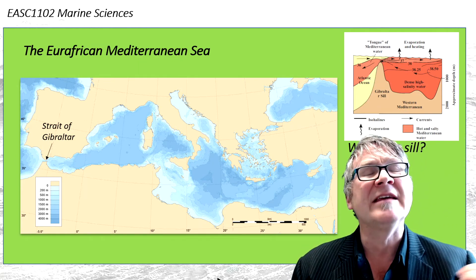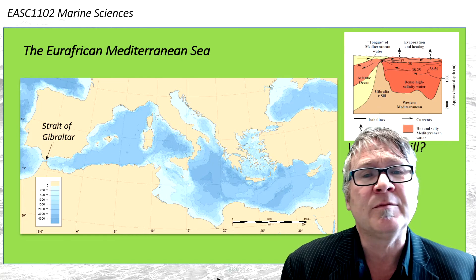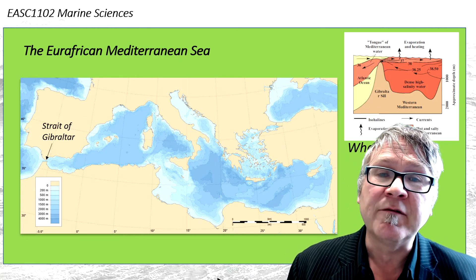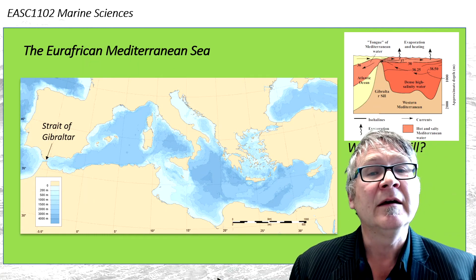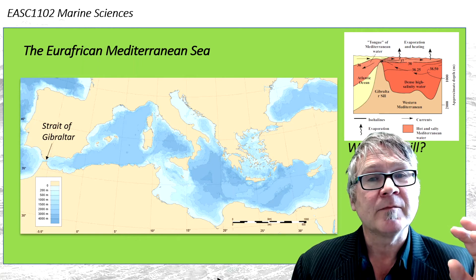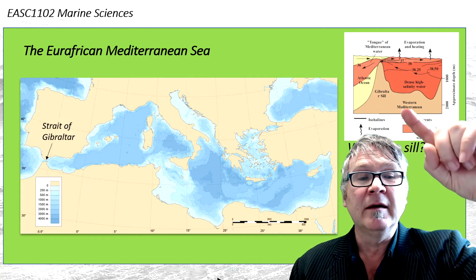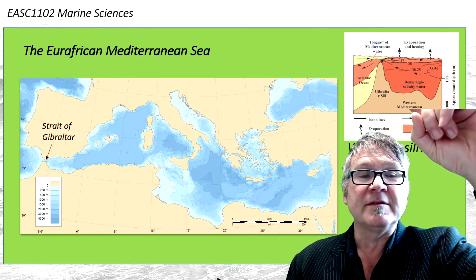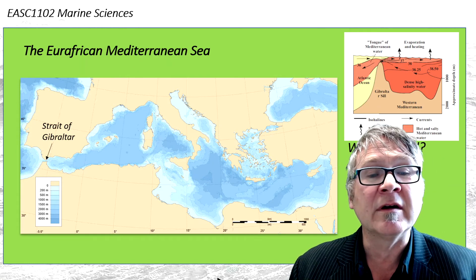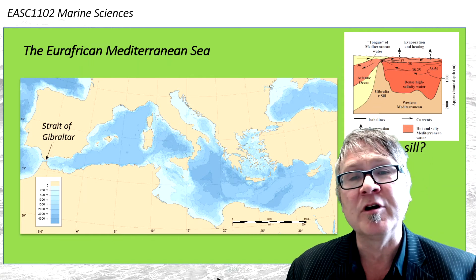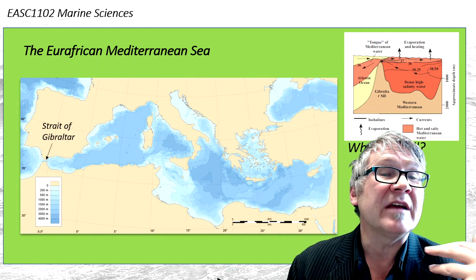The average salinity of the oceans is around 35 grams per kilogram — nowadays we don't use units for salinity. If you look at the diagram, the salinity in the Mediterranean reaches 38, while the outflow measures around 36. So the Mediterranean is hypersaline — it has a higher salinity than the open ocean.